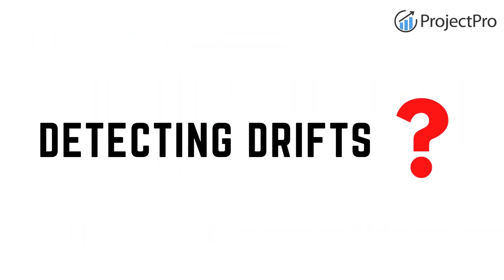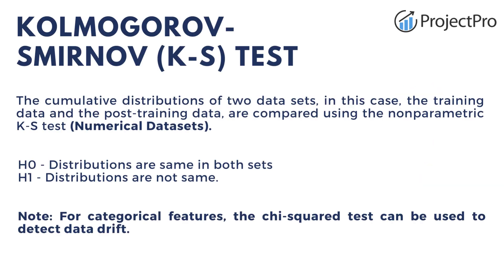Now let's talk about ways to detect drift. There are mainly three ways: statistical tests, model-based approach, and adaptive window-based tests. In the first statistical test, the KS test is used to compare two distributions — training and post-training data — and check if they have the same distribution. It is used to detect drift in the independent features. For categorical variables, we use the chi-squared test, and for numerical variables, we use the KS test.